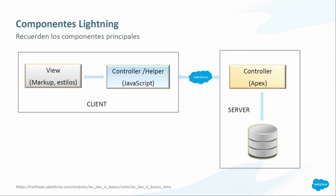Aquí tenemos la estructura general de un componente Lightning. Vemos dos partes claramente diferenciadas: la parte de cliente y la parte de servidor. La parte de cliente es el paquete que engloba un componente Lightning; dentro podemos destacar la vista, que es un fichero XML con código HTML incluido que define las características visuales del componente. Esa vista está íntimamente relacionada con los ficheros JavaScript, de los cuales los principales son el controlador y el helper. El controlador escucha los eventos de la parte visual y se pone en contacto con el servidor para solicitar información del backend. En el servidor tenemos el controlador Apex, que ya utilizábamos en nuestra aplicación monolito y es la parte que más podemos reutilizar.